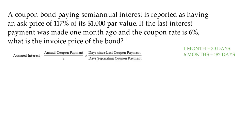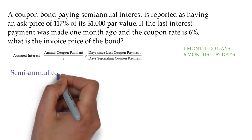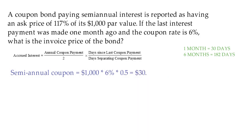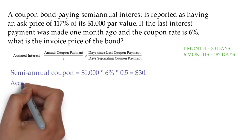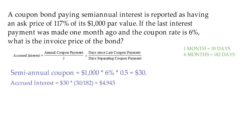First of all, we will calculate the coupon payment: semi-annual coupon equals $1,000 times 6% coupon times 0.5, which is $30. Now we will plug in the numbers in the formula: 30 times 30 divided by 182, which gives $4.945.